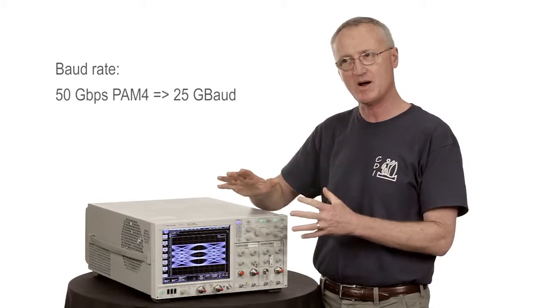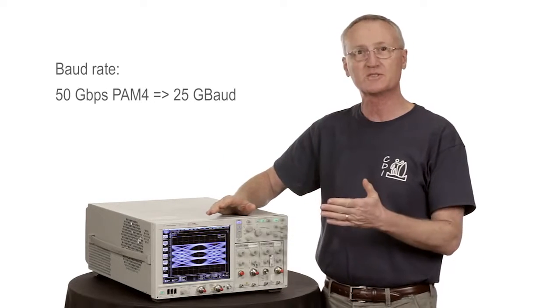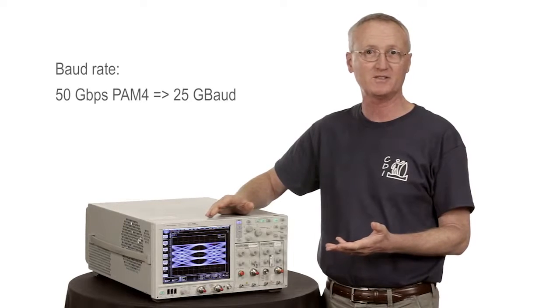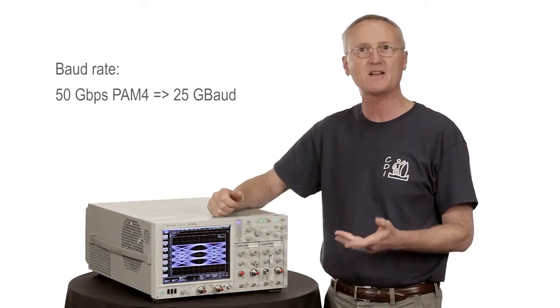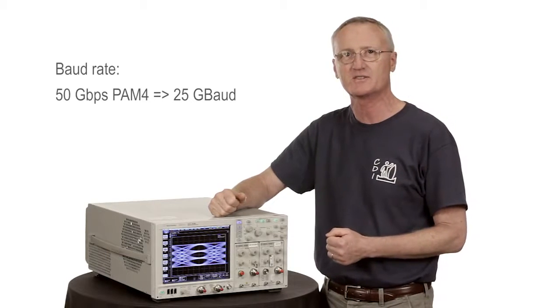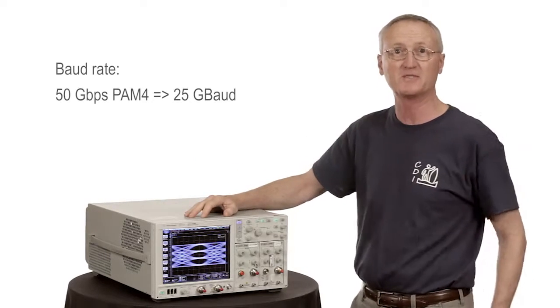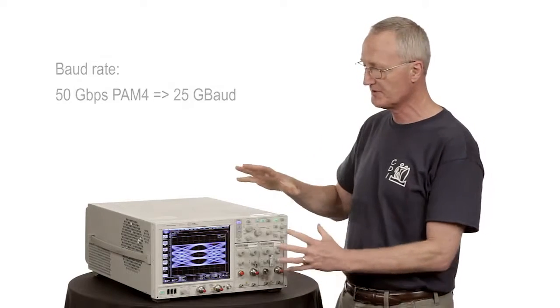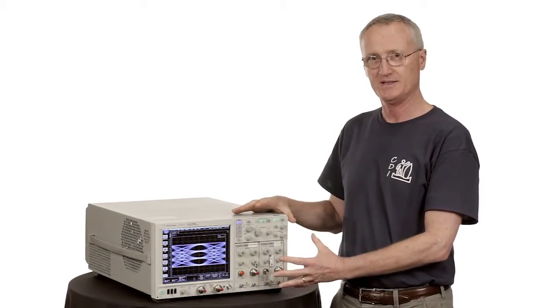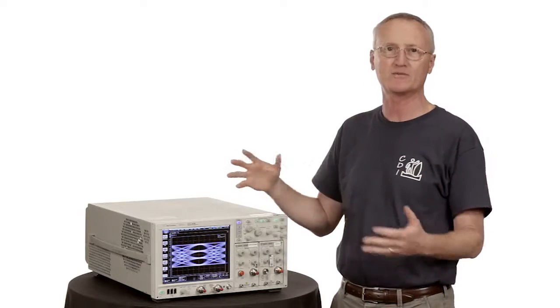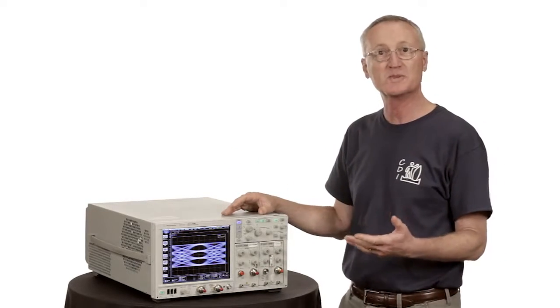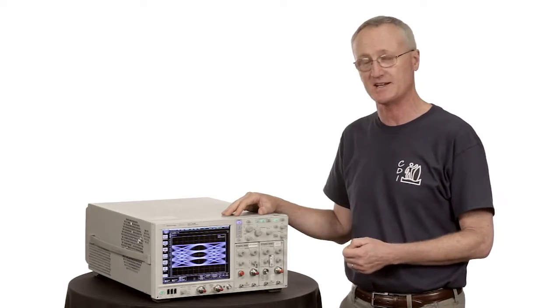So 25 gigabaud has a fundamental frequency of 12.5 gigahertz. If we were to look at the third harmonic of that, we'd be on the order of 37 gigahertz. Even up to the fifth harmonic, you're a little bit above 60 gigahertz. So in terms of configuring bandwidth in the DCA to make that measurement, we have a lot of flexibility and plenty of range to make those measurements even up to 50 gigabit per second.